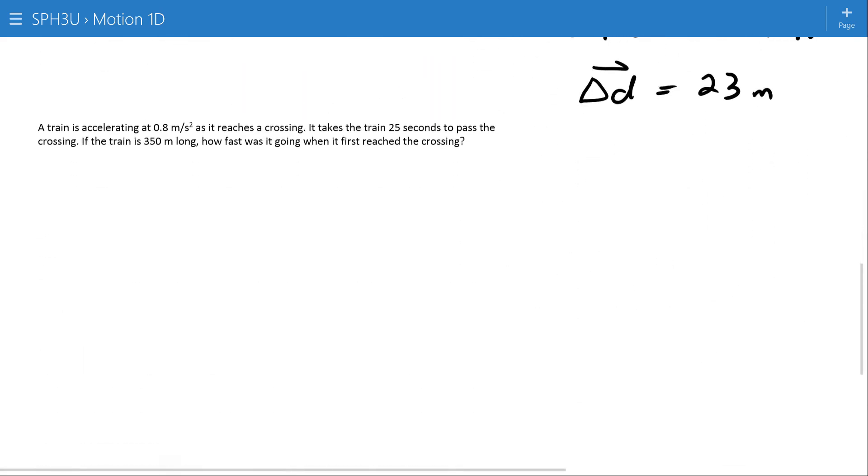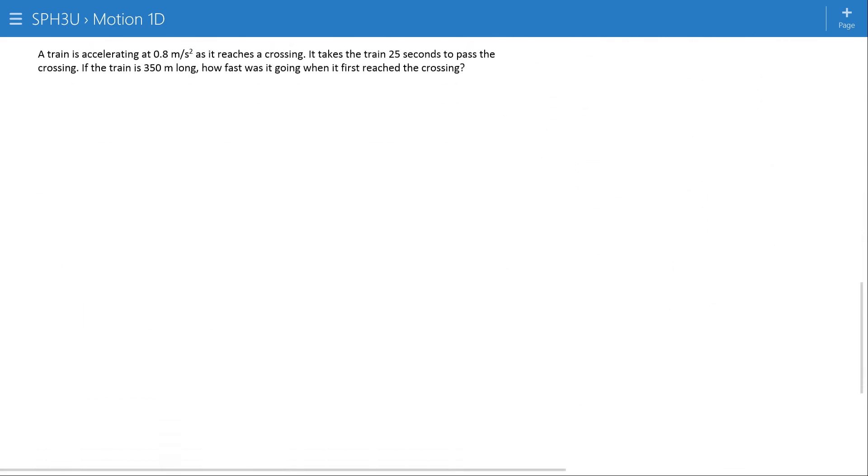Okay, one more. A train is accelerating at rest, accelerating at 0.8 meters per second squared as it reaches a crossing. It takes the train 25 seconds to pass the crossing. The train is 350 meters long. How fast was the train going when it first reached the crossing?